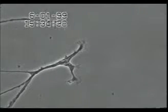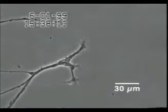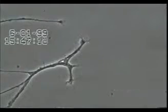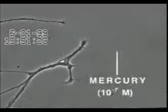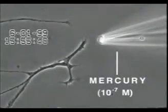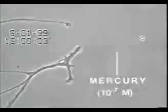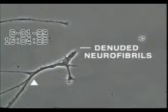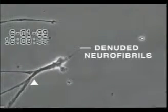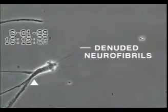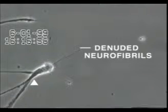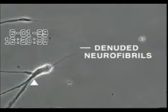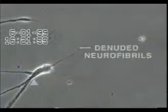In this experiment, neurons also isolated from snail brain tissue were grown in culture for several days, after which very low concentrations of mercury were added to the culture medium for 20 minutes. Over the next 30 minutes, the neurite membrane underwent rapid degeneration, leaving behind the denuded neurofibrils seen here. In contrast, other heavy metals added at this same concentration, such as aluminum, lead, cadmium, and manganese, did not produce this effect.